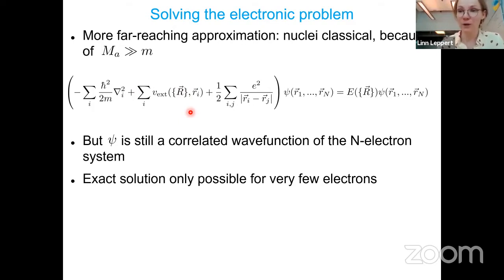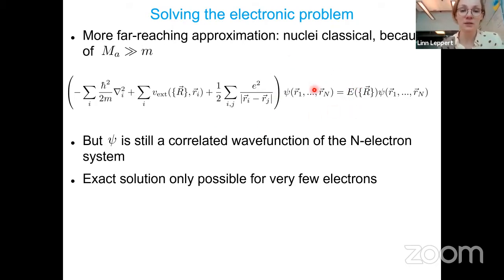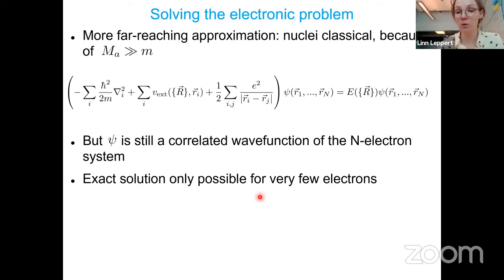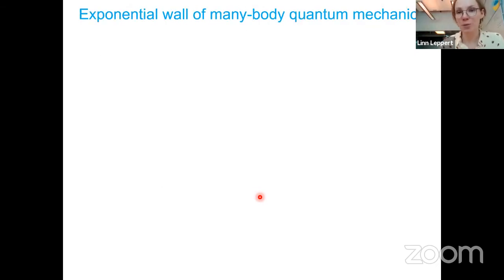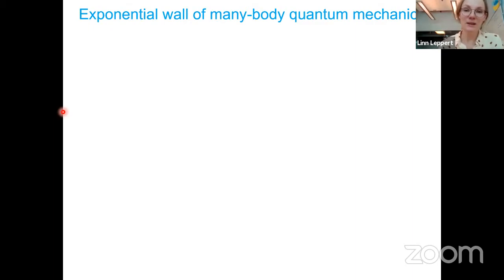We get the electronic wave function which depends on the positions of the electrons and indirectly on the positions of the nuclei through the parameter dependence of the potential. We have already simplified the problem enormously, but this electronic wave function is still a highly correlated, high-dimensional wave function of the N-electron system. An exact solution for this is only possible if there are very few electrons.